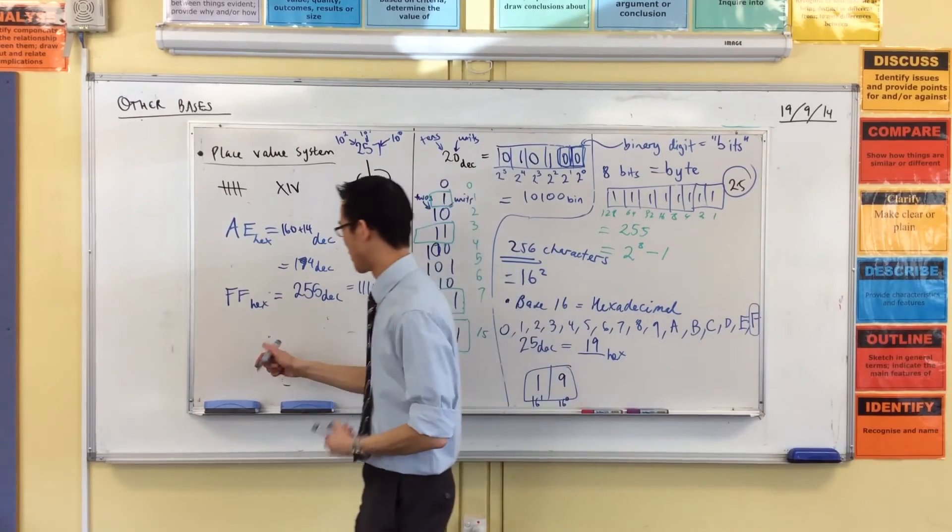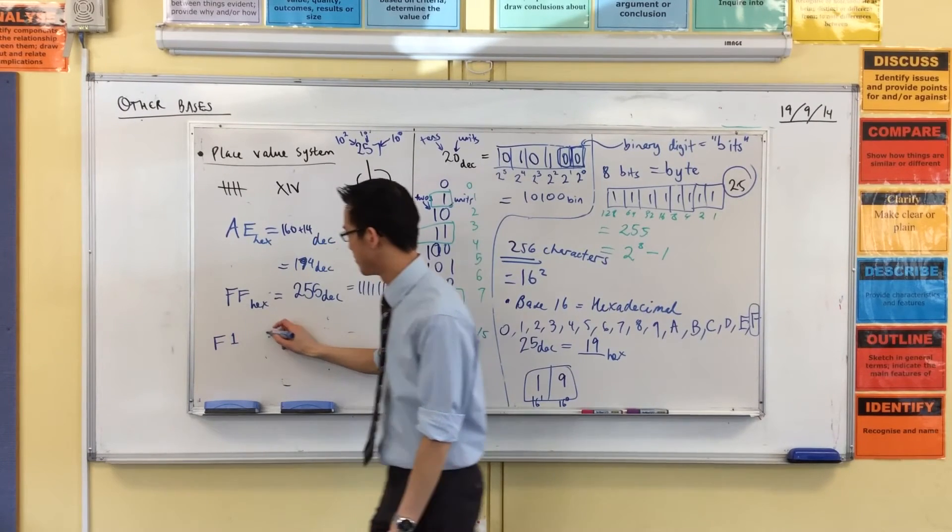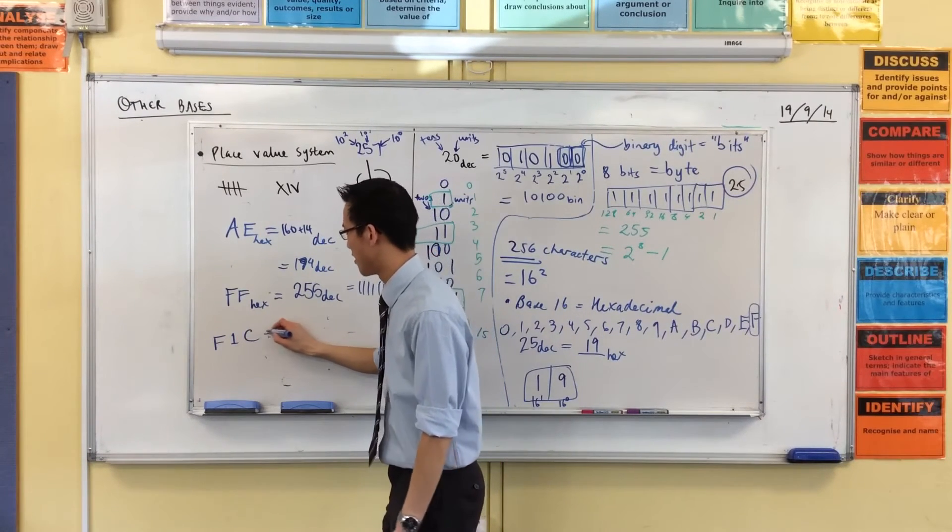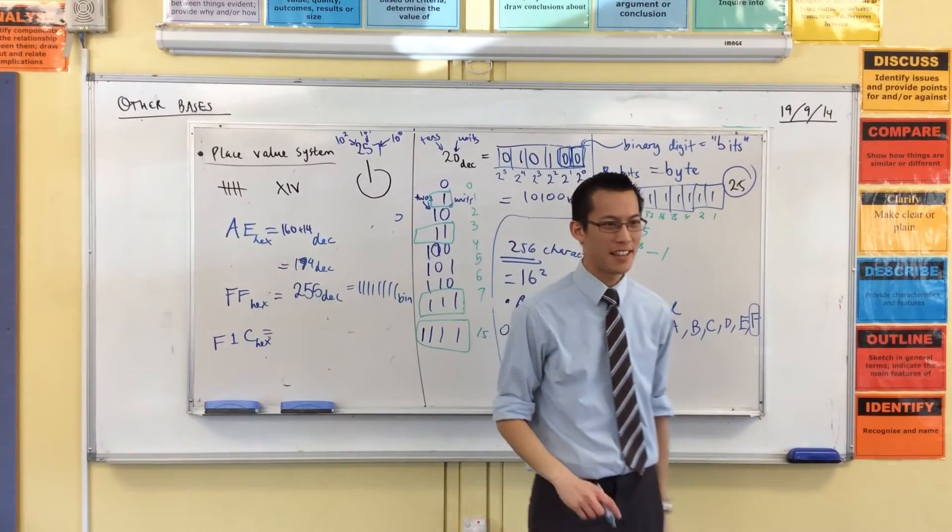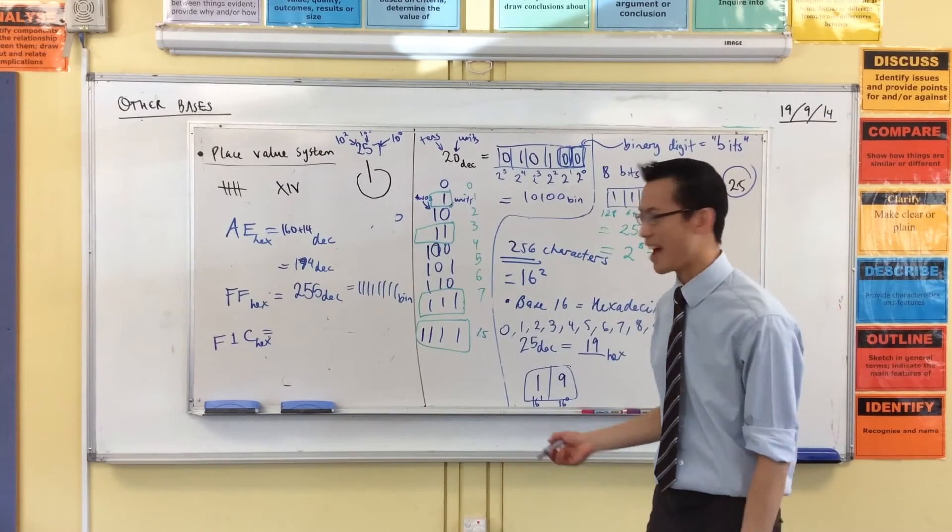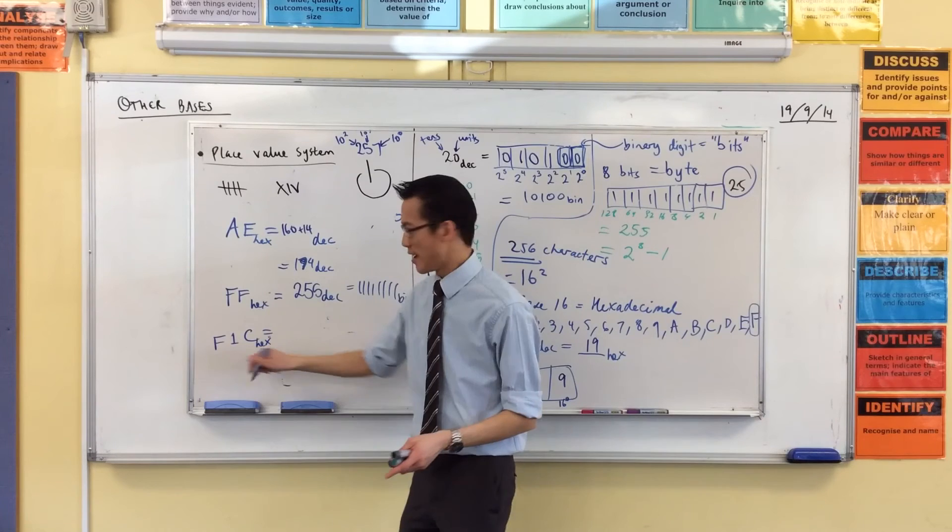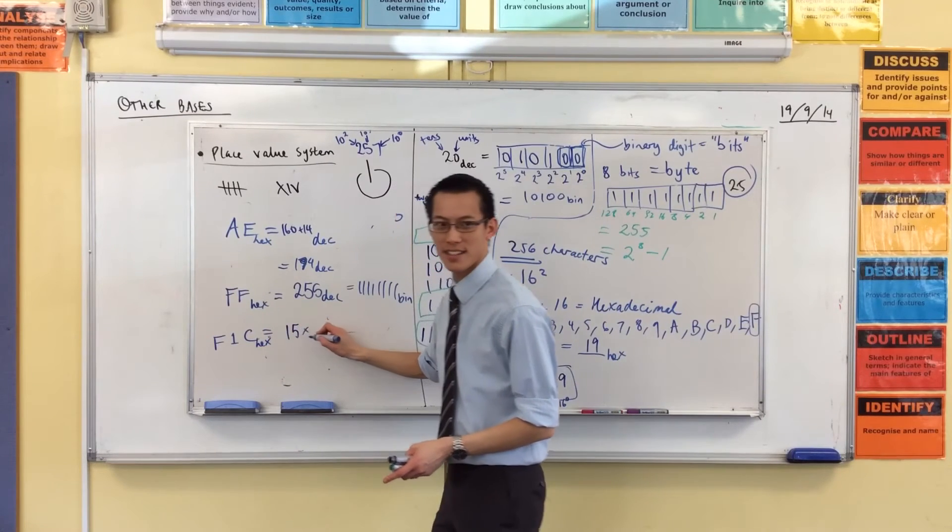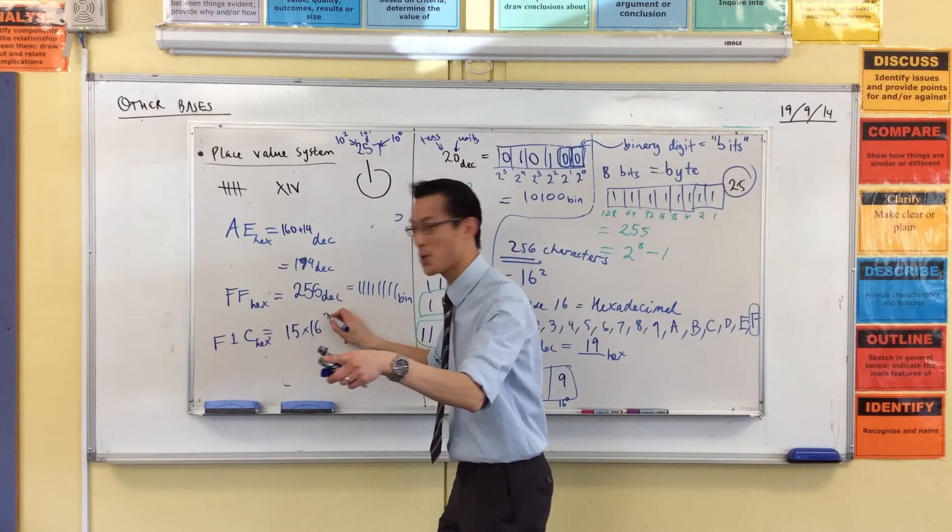What would this number be? What would that be? That's hexadecimal, right? This is going to be a big number, right? How would you work it out? What does that mean? It's 15 lots of what? 16 squared, 16 to the power of 2, right?